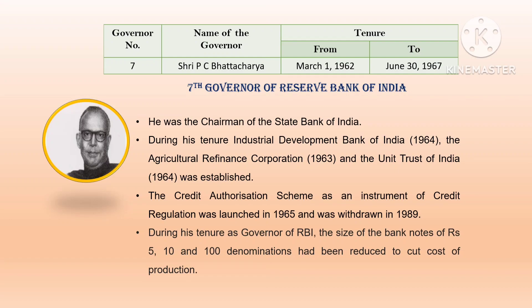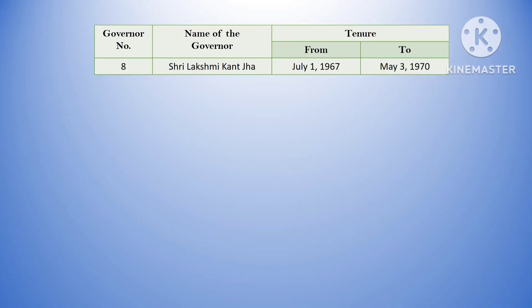During his tenure as RBI governor, the size of banknotes of Rs.5, 10, and 100 denominations was reduced to cut the cost of production.